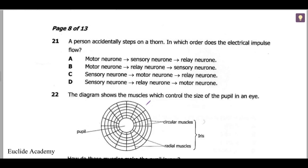Let's continue with the questions we left yesterday, the ones we didn't finish. We have question 21 to start with: a person accidentally steps on a thorn. In which order does the electrical impulse flow? We talked a lot about the flow of the electrical impulse when we did the nervous system.